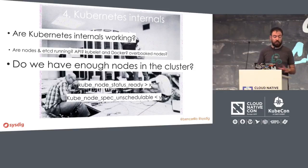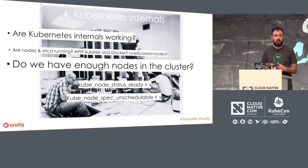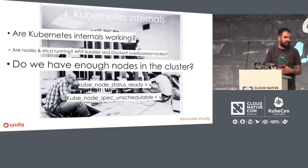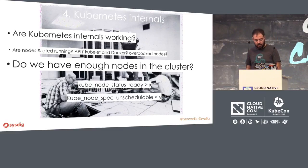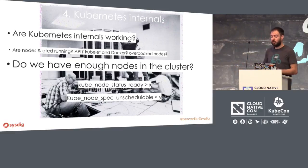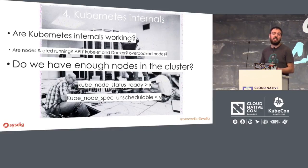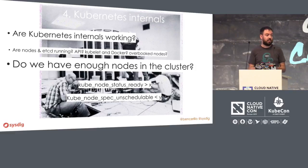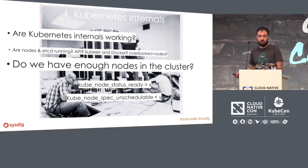The fourth point to monitor is Kubernetes internals — how we can make sure Kubernetes is working. There are a few internal services like etcd, Kubelet, Docker, and the Kubernetes API. We need to make sure those are working. But something we also need to look at is whether we have enough physical or virtual nodes inside our cluster. If we are overbooking our nodes, things will start collapsing.